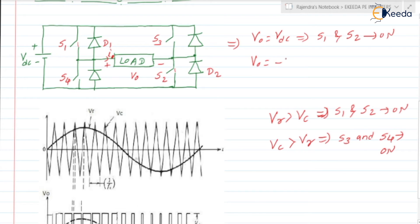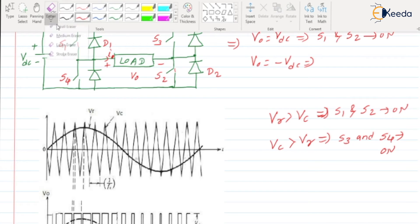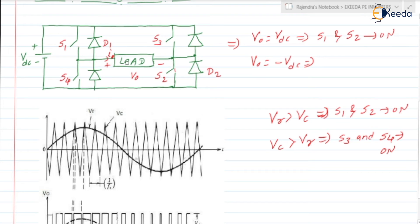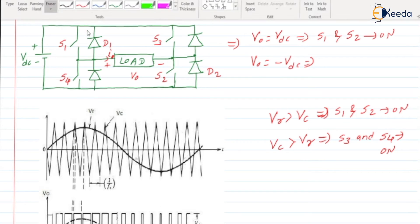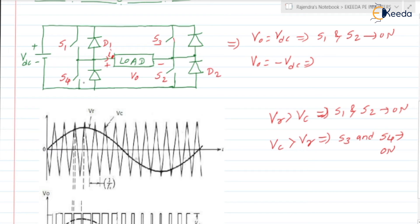V0 = −VDC when S3 and S4 are in the on state. Then the current flows from VDC through S3, through the load, through S4, and back to VDC, making V0 = −VDC. So: when VR > VC, S1 and S2 are on and V0 = VDC; when VC > VR, S3 and S4 are on and V0 = −VDC.